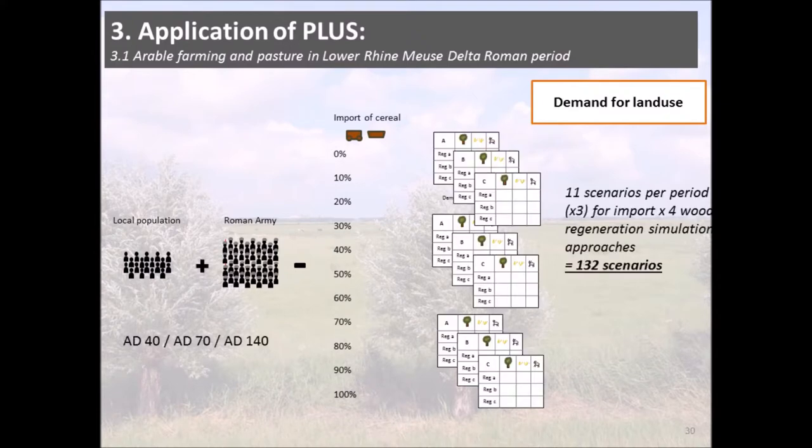We formulated different scenarios. We did it for three periods. In total we arrive at 11 scenarios per period, times three periods, times four regeneration simulation approaches, giving a total of 132 scenarios that we applied.